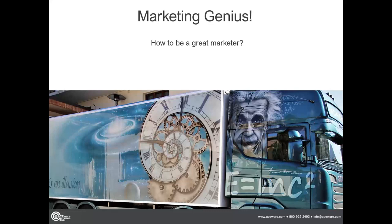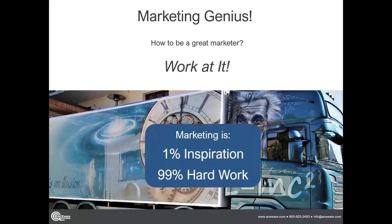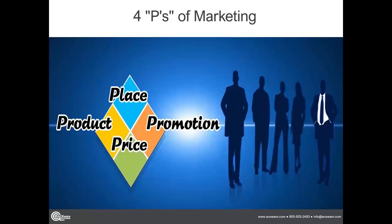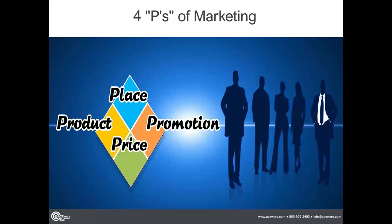Kind of a general overview on marketing — how can you be a great marketer? The old Einstein comment: genius is so much inspiration, and the rest is just muscle-down hard work. We'll review the classic four P's of marketing and how you're going to present your product to your audience. But I think one of the things this really doesn't bring in enough is that fifth P, which is people — which are your customers.